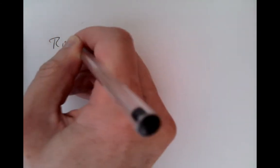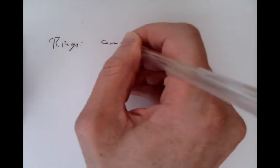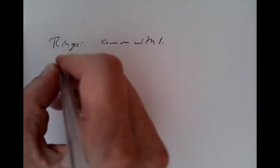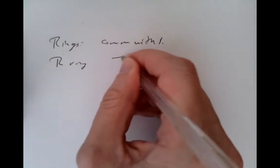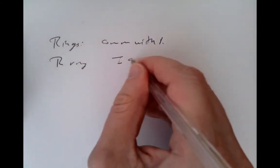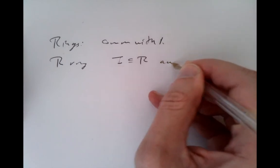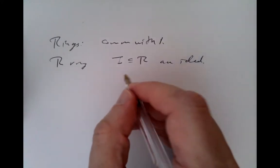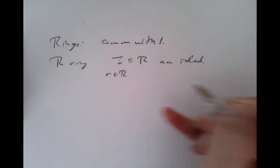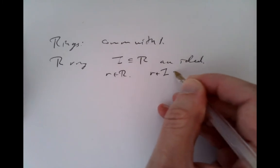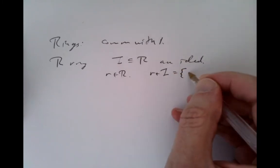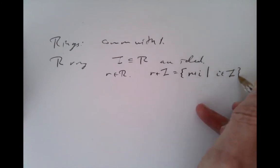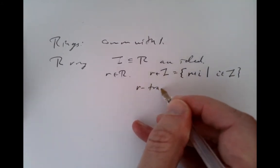All of our rings from here on in will be commutative with identity. Suppose that R is a ring, commutative with identity, and that I inside it is an ideal. Then we can pick an element r in R, and we write r plus I to mean the set of all possible values of r plus little i, such that little i is in big I. And it's called the translate, or the r-translate of I.